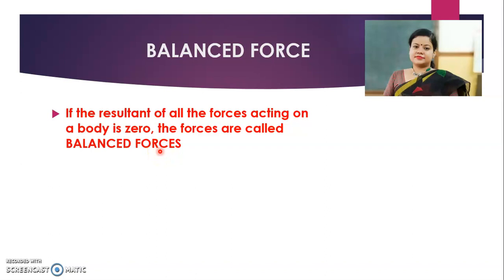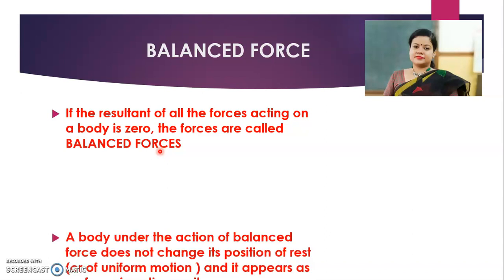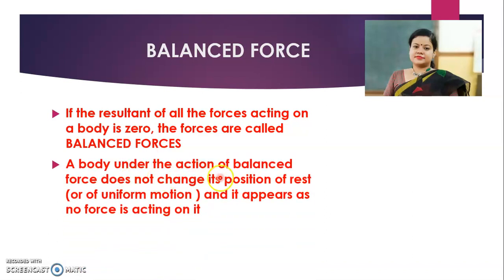In our previous video we discussed that forces are due to interaction. In a single object, more than one force can act, and forces can result into interaction between two objects. We have considered the resultant or the net force. A body under the action of balanced force does not change its state of rest or uniform motion — it appears as if no force is acting on it. So if balanced forces are acting on an object, the resultant or net force is zero.